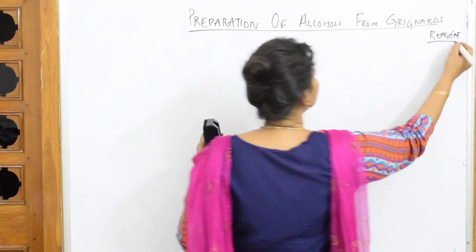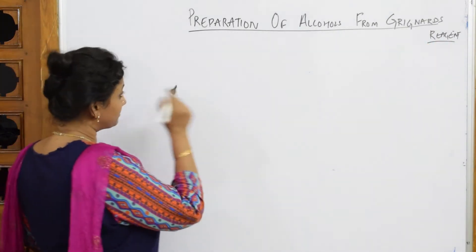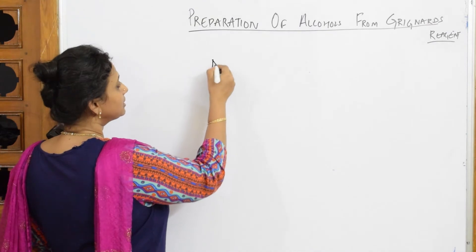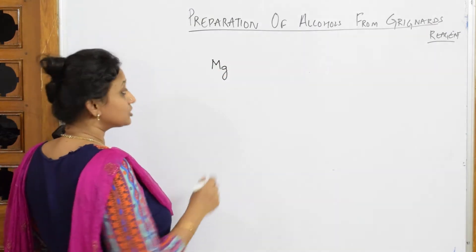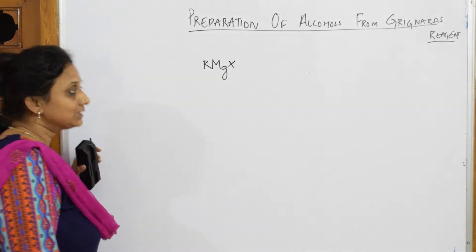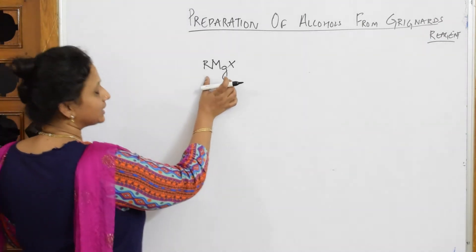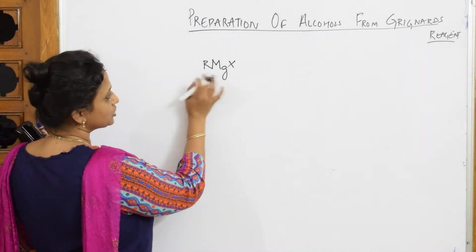Now we very well know Grignard's reagent is an organometallic compound. What is organometallic compound? If a metal is attached to a carbon atom directly and with a halogen, then it is called organometallic compound. Here RMgX, you can take R group.